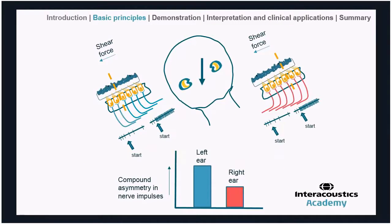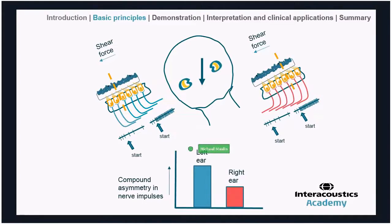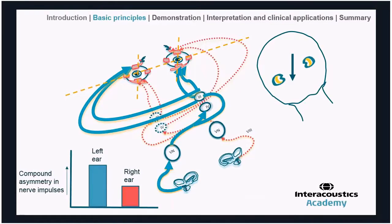To summarize the net effect: on the left there is a larger proportion of stereocilia bent toward the kinocilium causing an increase in activity, with a compound asymmetry resulting. On the right the net effect is a reduction in activity. This asymmetry in the linear VOR drives the appropriate ocular counter-roll, with the side toward which we tilt showing increased activity and the opposite side showing decreased activity.